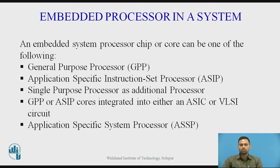An embedded system processor chip or core can be one of the following. The first one is a general purpose processor, which is designed without considering a specific application, so it has a general instruction set. Microprocessors and embedded processors are examples of general purpose processors.